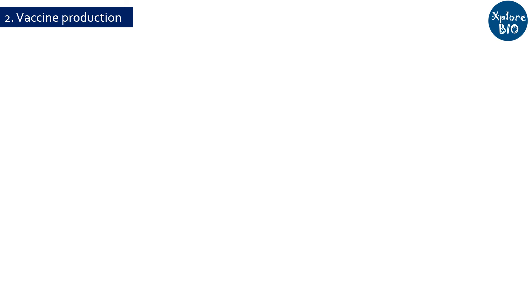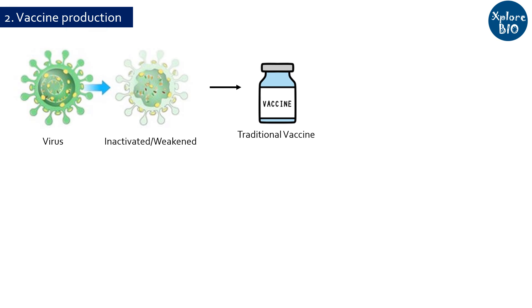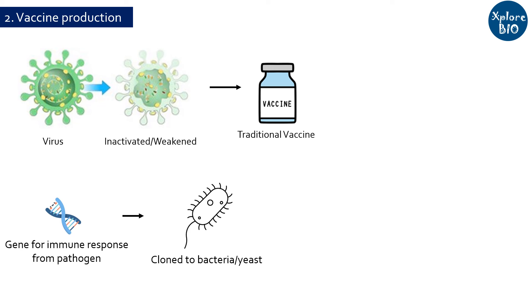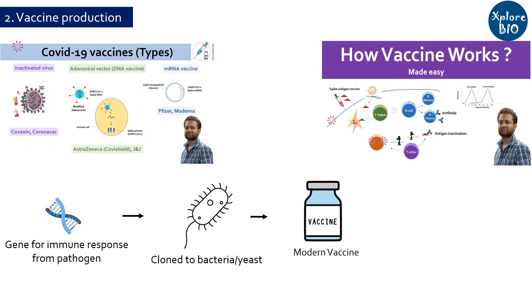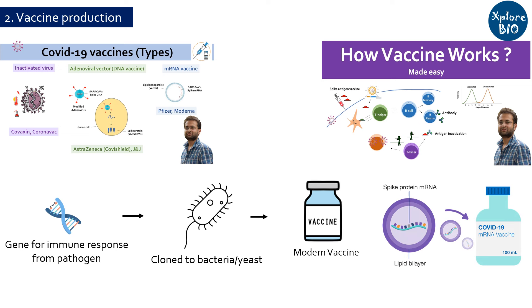Another very useful application is in developing vaccines for dreadful diseases. Traditional vaccines use weakened viruses, but Recombinant DNA technology offers a more targeted approach. Scientists can take the gene responsible for immune response from pathogens like viruses and put it into harmless bacteria or yeast for production of vaccines that can be easily purified and used to develop immunity in humans. Examples include the Hepatitis B vaccine and DNA and mRNA vaccines used for COVID-19. Generally, genes encoding surface antigens of a virus are used for developing vaccines.